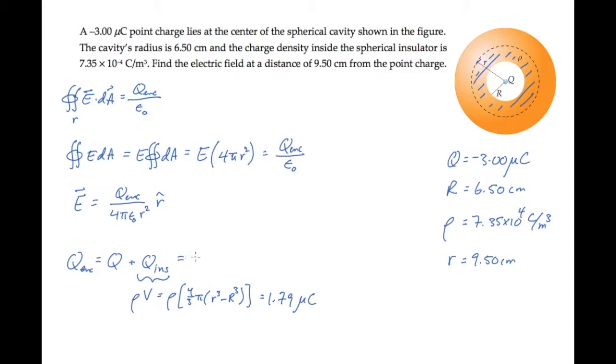When we combine this with the minus 3 microcoulombs in the point charge, we find that the total charge enclosed by our Gaussian surface is minus 1.21 microcoulombs.